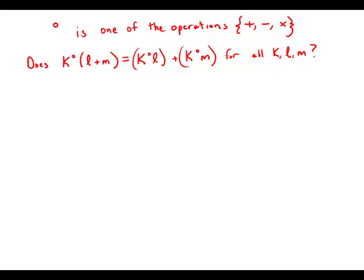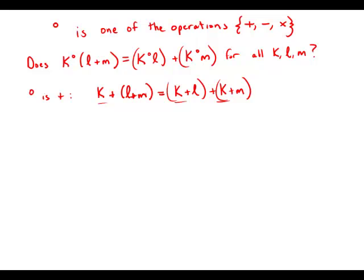So let's experiment. Suppose circle is addition. Then this equation would say k plus (L plus M), which would just be k plus L plus M, equals k plus L plus k plus M. That doesn't work because we wind up with one k on one side of the equation and two k's on the other side. So this statement does not work if circle is addition.